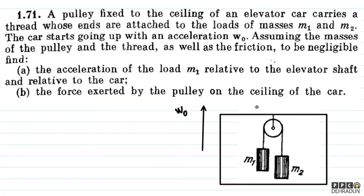Children, I have made a diagram here. M1 and M2 are attached to this pulley — this is the whole pulley system. It is fixed in an elevator car and it is accelerated upward, as given that the car starts going up with an acceleration W0. The W0 vector is shown here.